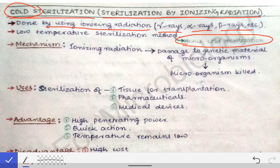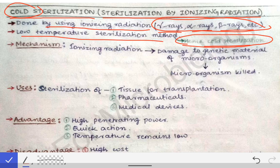They are called cold sterilization because when we use these ionizing rays, they do not increase the temperature but instead cause mutations and alterations in the genes of the organisms, thereby causing death. Since the temperature is not increased, it is called cold sterilization. This is a low temperature sterilization method.